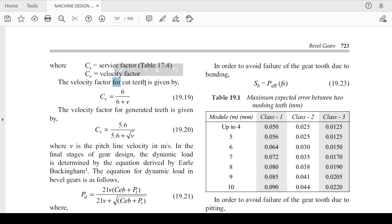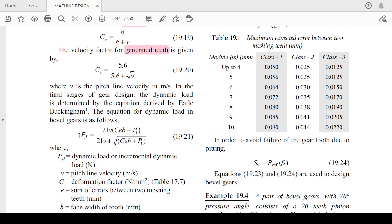The velocity factor for the cut teeth is 6 divided by 6 plus v, while velocity factor for the generated teeth depends on the manufacturing method of bevel gear teeth. Depending on which kind of teeth they have manufactured, either cut teeth or generated teeth, you can select the velocity factor formula.